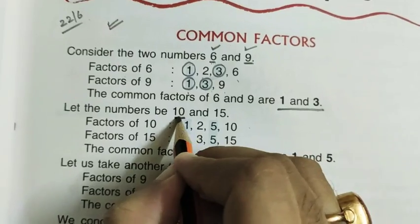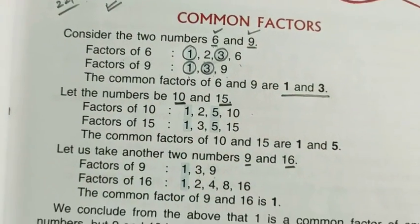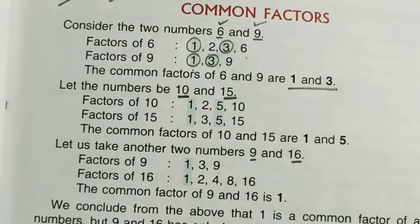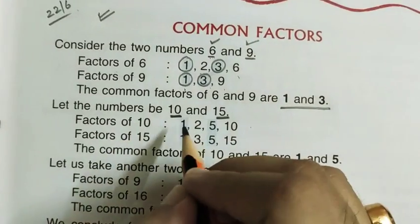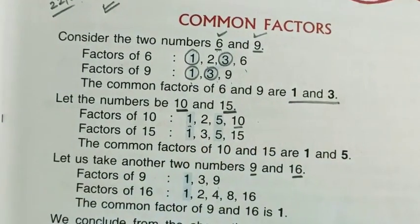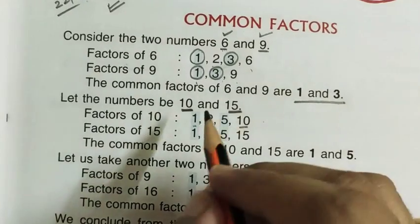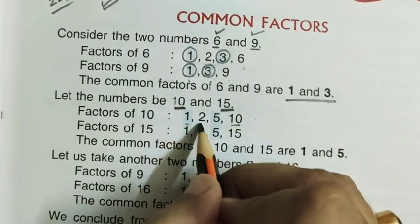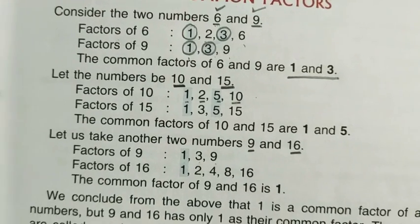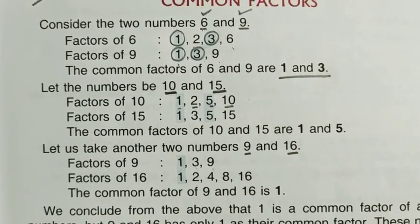Let's look at another example. Here are two numbers: 10 and 15. The factors of 10 — which numbers divide 10? They are 1, 2, 5, and 10. Both 2 and 5 divide 10 perfectly.